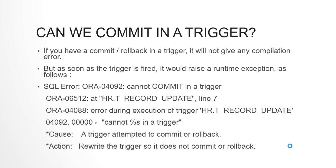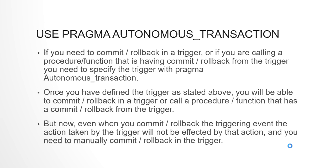But what if it's a requirement to commit inside a trigger, or you are calling a procedure or function from the trigger and that procedure or function has a commit or rollback in it? In such a scenario, what you need to use is PRAGMA AUTONOMOUS_TRANSACTION. Just declare the trigger as PRAGMA AUTONOMOUS_TRANSACTION and now you can commit, rollback, or call a procedure or function which has a commit or rollback in it.